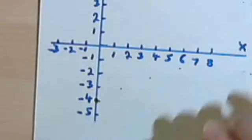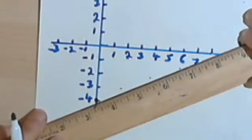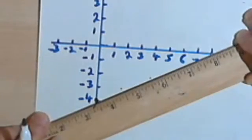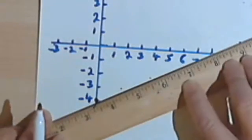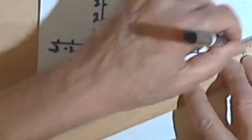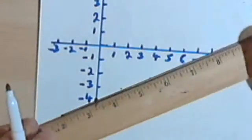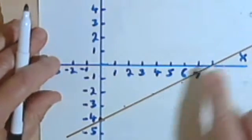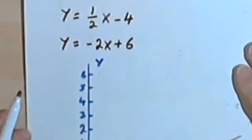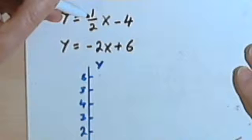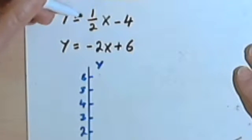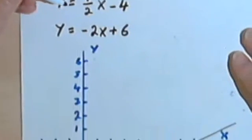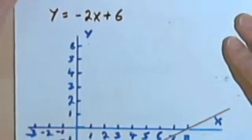And now I've got this line. And remember, every point on this line is a solution to this first equation. Actually, let's write that equation on the line so we remember which one it is. That's y equals 1/2 x minus 4.